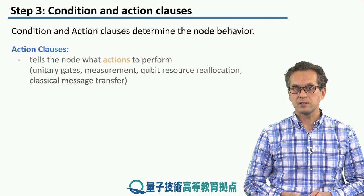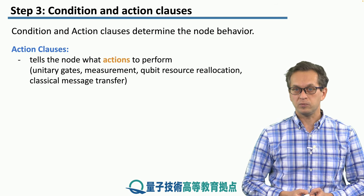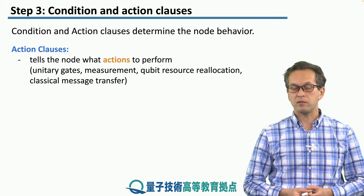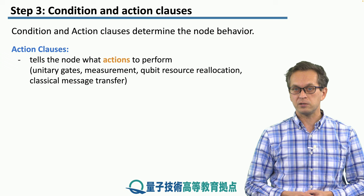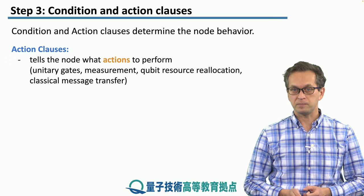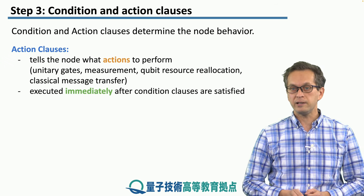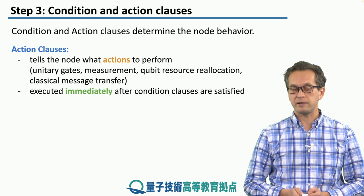Action clauses tell the node what to do. This could be anything from unitary gates, measurements, qubit resource reallocation, or classical message transfer. They are executed immediately after the condition clauses are satisfied.